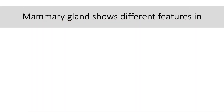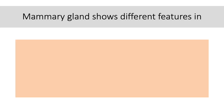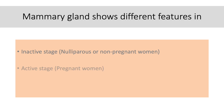Mammary gland shows different features in different stages of the reproductive cycle. We study the mammary gland under three stages: the inactive stage, seen in nulliparous or non-pregnant women; the active stage, seen during pregnancy; and the lactating stage.